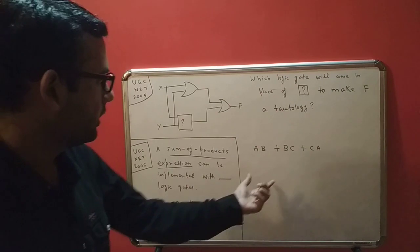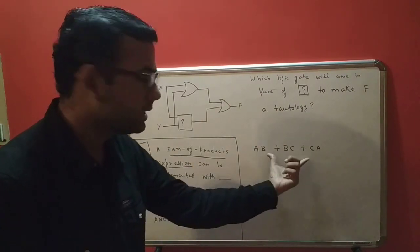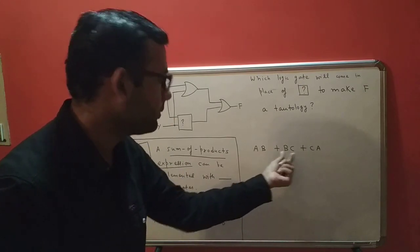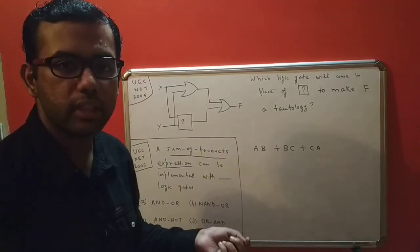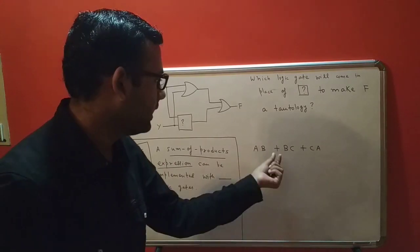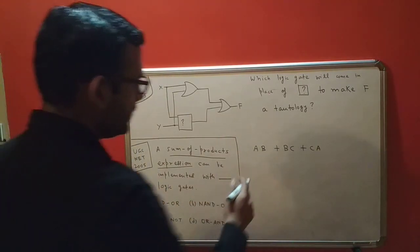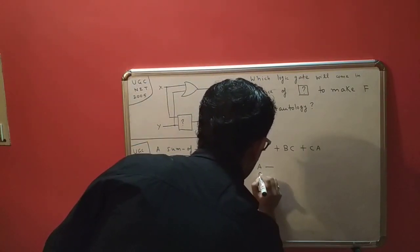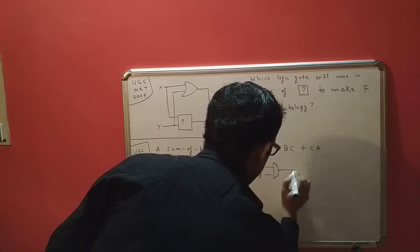Here we have three product terms, and these product terms are joined using sum terms. How is a product term implemented using logic gates? A product term is implemented using AND gates, and a sum term is implemented using OR gates.